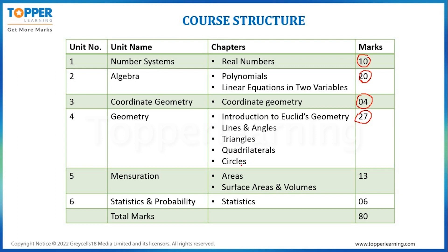Then Mensuration. It will be having only 2 chapters: Areas, and Surface Areas and Volumes, and together they will be of a total of 13 marks.